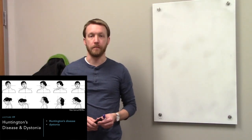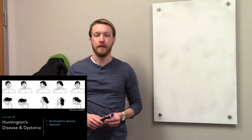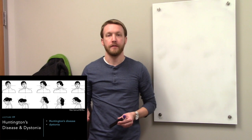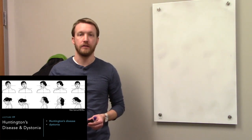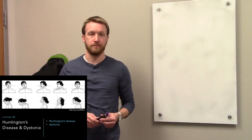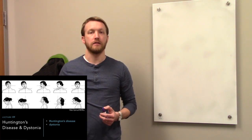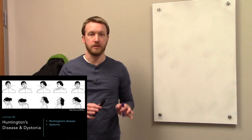In our last lecture, we talked about Parkinson's disease, which is caused by an increase in basal ganglia output that suppresses activity in the motor nuclei of the thalamus. So abnormal activity in the basal ganglia creates a decrease in movement.